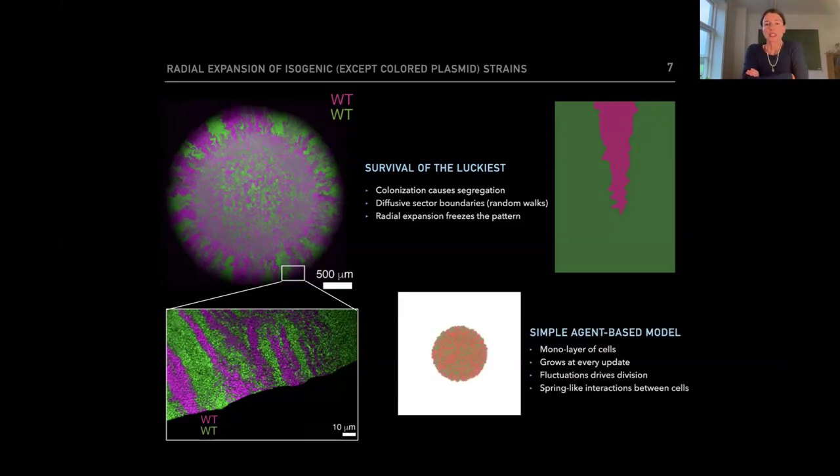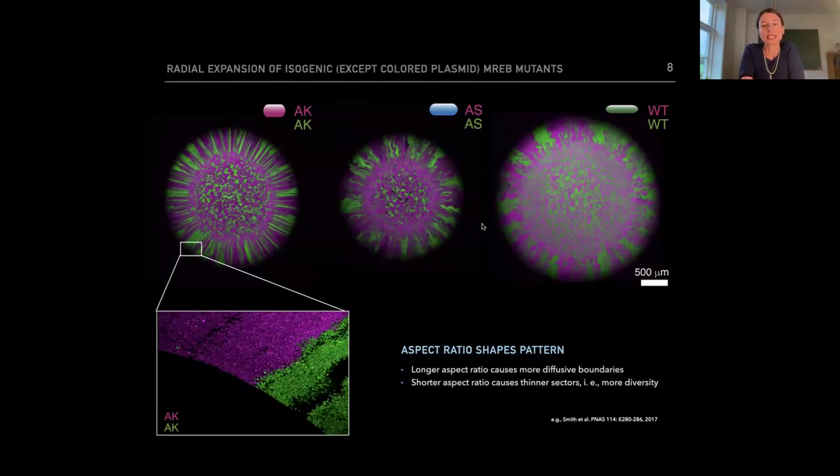Using this aspect ratio and a few other rules, we can, with a simple agent-based model, reconstitute these kind of patterns. We also let the mutants compete with themselves and find that longer aspect ratios give more diffusivity. And, as a consequence, the shorter ones will have more straight boundaries. And, as straight boundaries have a smaller chance of meeting, you end up with a pattern with many more sectors, which means more intermixing of the two strains. We could also say that it actually promotes diversity.